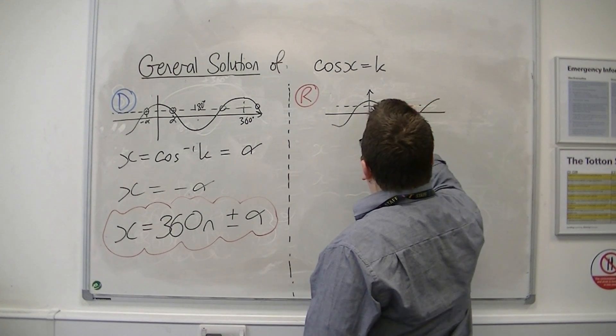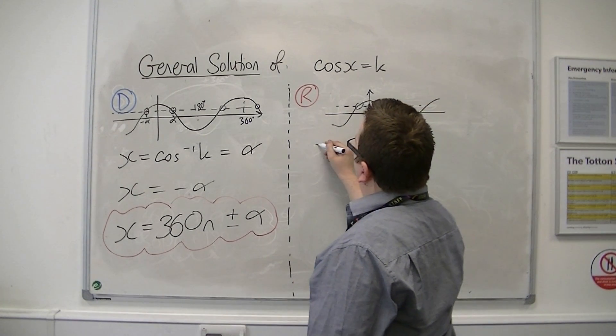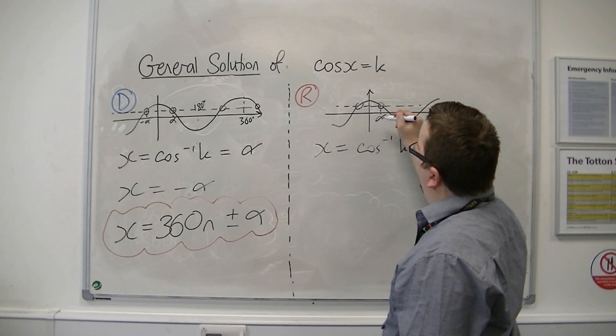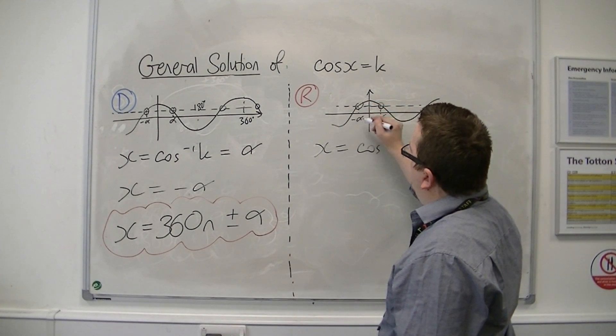So there's k again. There's my two solutions. So no change here. That's my first solution, alpha. So my second solution is minus alpha.